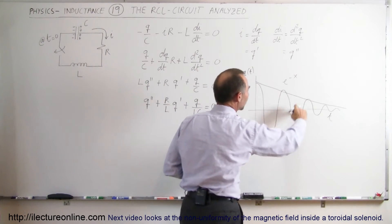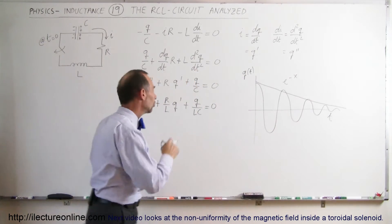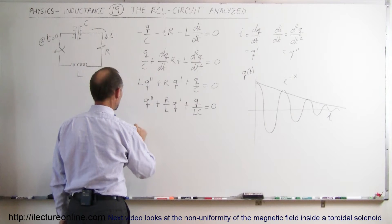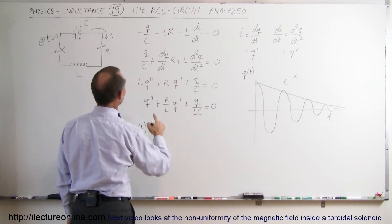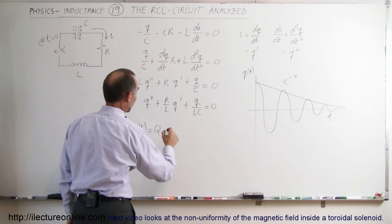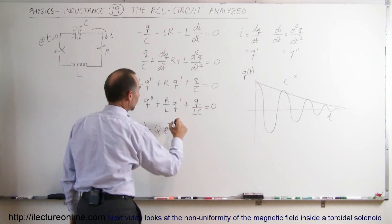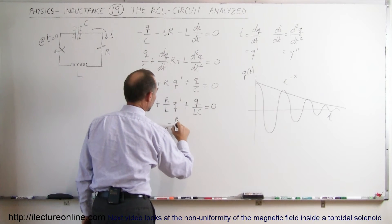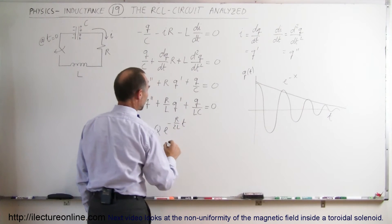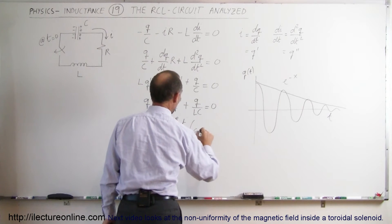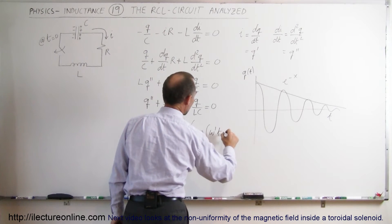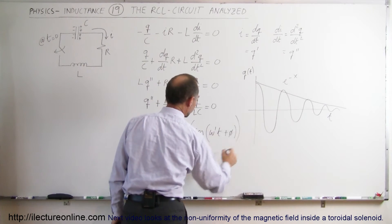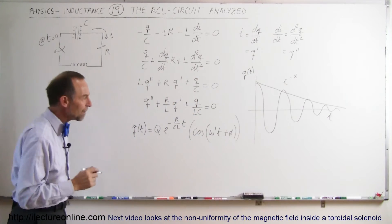So the solution to this equation is that q as a function of time is equal to the total charge that we start with times e to the minus r over 2l times time times the cosine of omega prime t plus the phase angle. Now, the question is, what is omega prime?